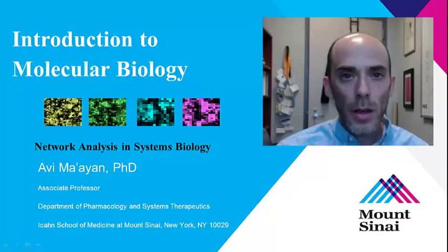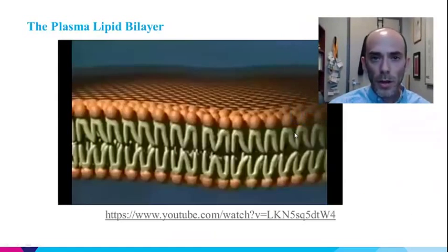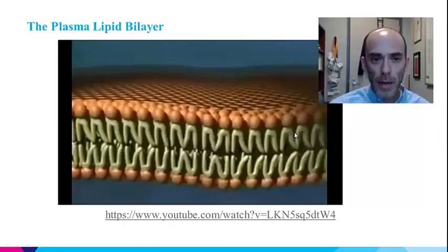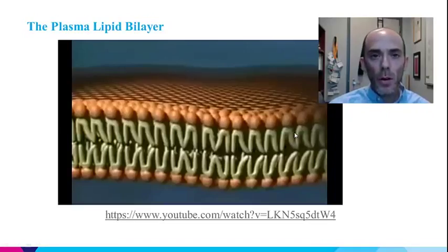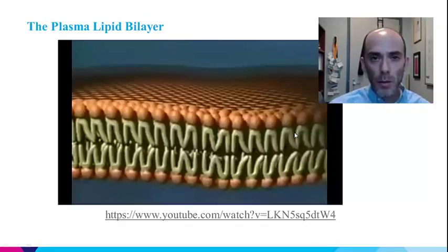Now we're going to start talking about molecular components that make up the cell. One of the most important molecular components relevant to cell signaling networks is the plasma membrane. This is the barrier of the human or mouse cell, and it's made of a lipid bilayer that this movie explains in a little bit more detail.